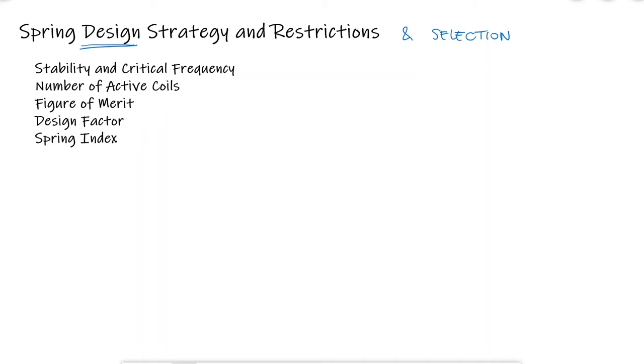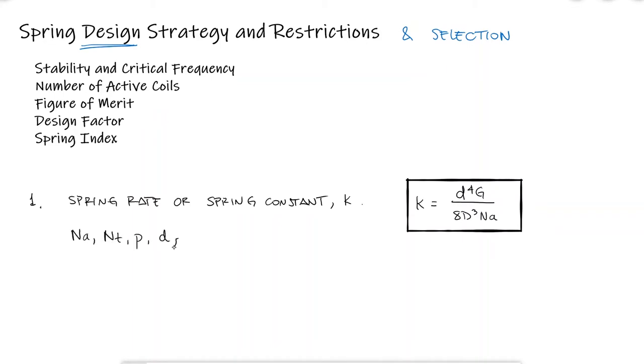These include three main categories. The first is related to calculating the spring constant, which is one of the most important parameters of a spring, and it includes concepts like the number of active coils, the total number of coils, pitch, and wire diameter.